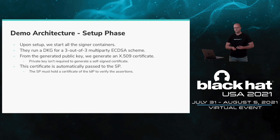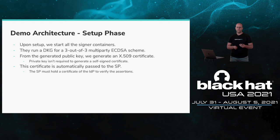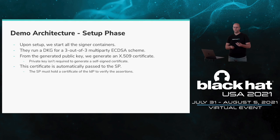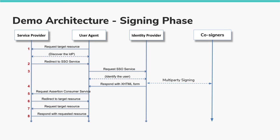The demo is composed of two parts. The first is the setup phase and the second is the actual signing phase. In the setup phase, we start all signing containers. Each of them takes part in our distributed key generation algorithm for creating a three-out-of-three private key for the EC-DSA threshold signature scheme. From the generated public key, one of the co-signers also generates a certificate that is automatically transferred to the service provider, enabling the SP to verify signed assertions.